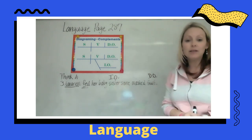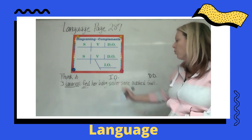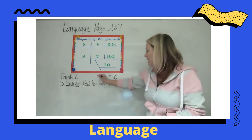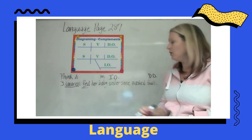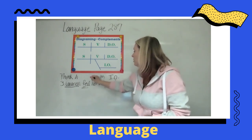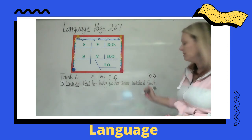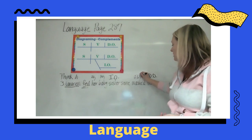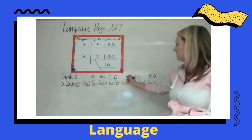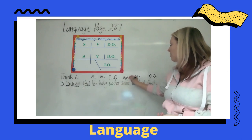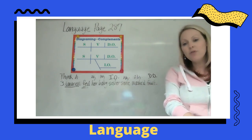We have an indirect object because we were able to answer 'to whom.' Which sister? The baby sister — that's an adjective. Whose sister? Her sister — another adjective. What fruit? The mashed fruit — another adjective. And how much fruit? Some fruit — another adjective.